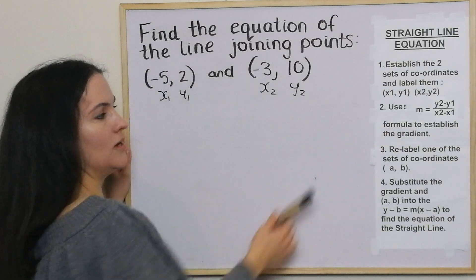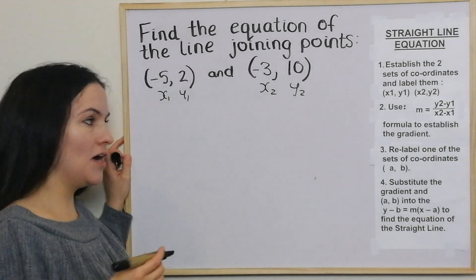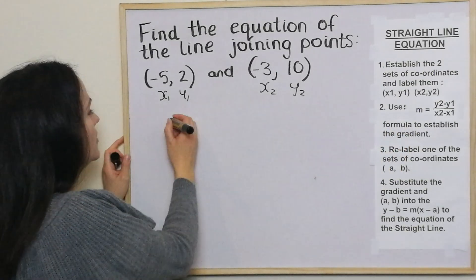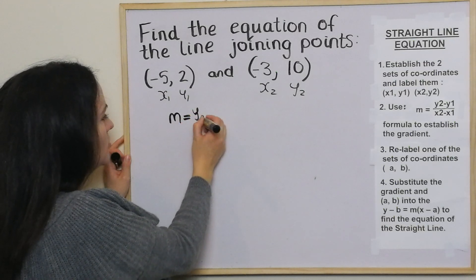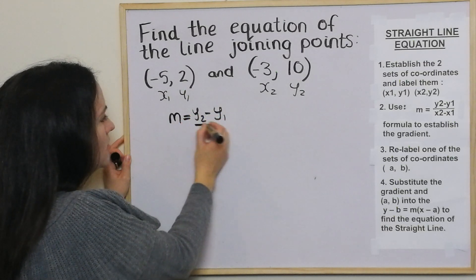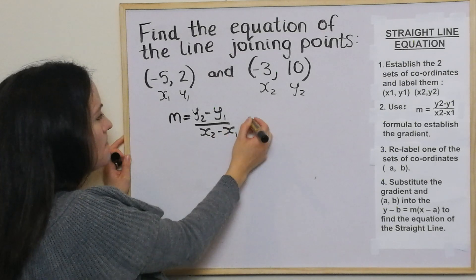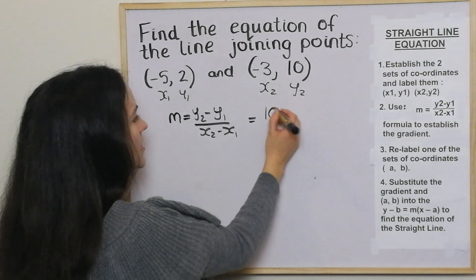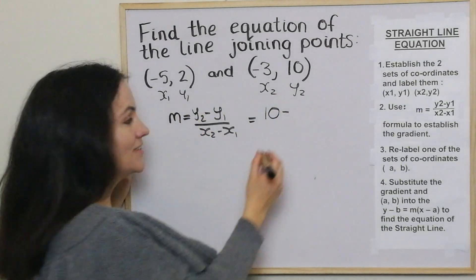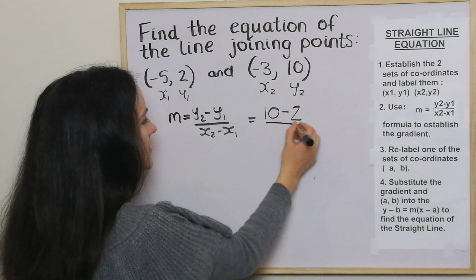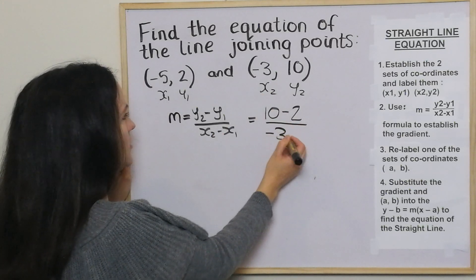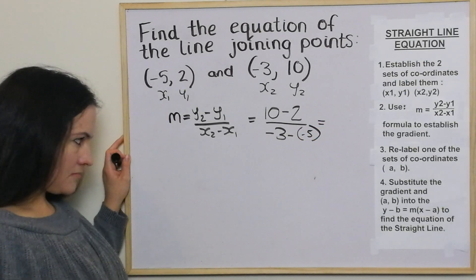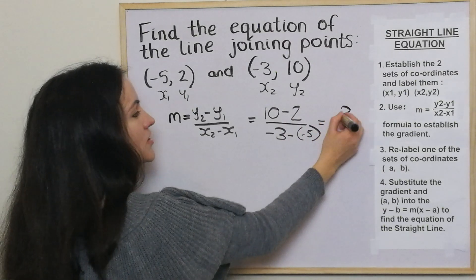We use this formula: m equals y2 take away y1 over x2 take away x1, in order to establish the gradient. So m equals y2 take away y1 over x2 take away x1. We just substitute in the values: y2 is 10, take away y1 which is 2, then x2 which is negative 3 take away x1 which is negative 5. Then we've got 10 take away 2 which is 8.